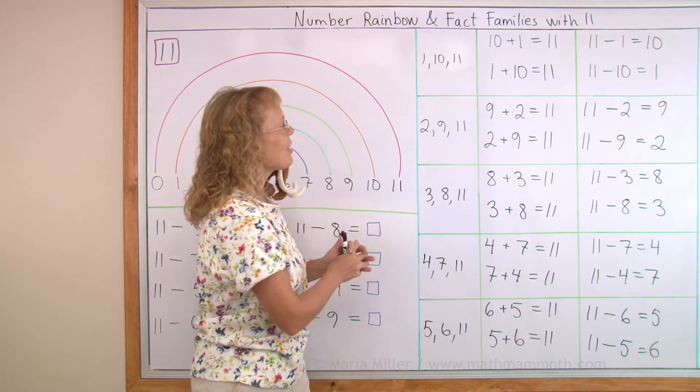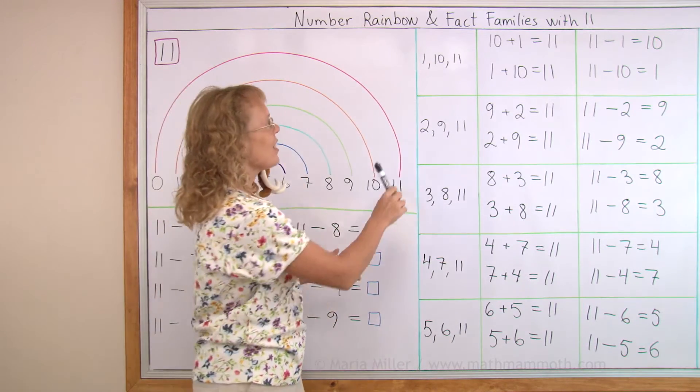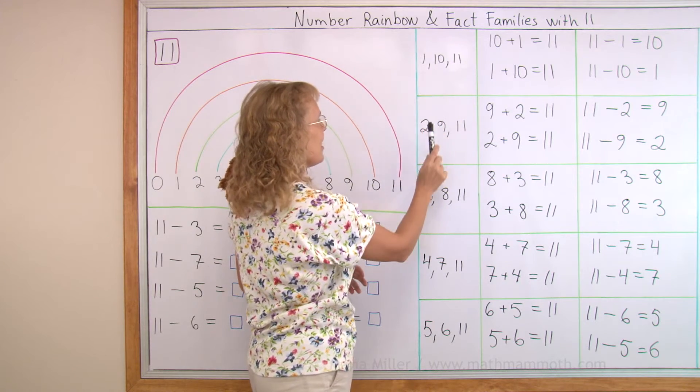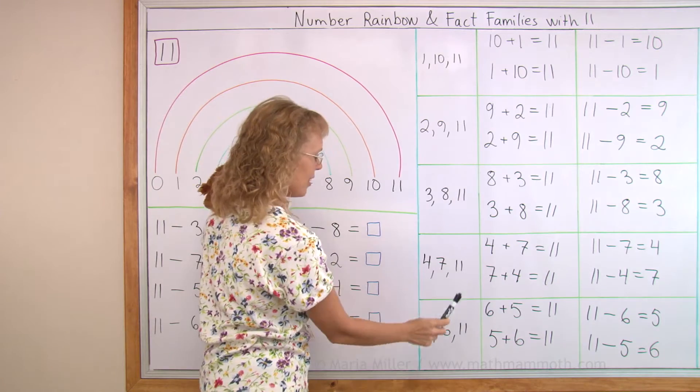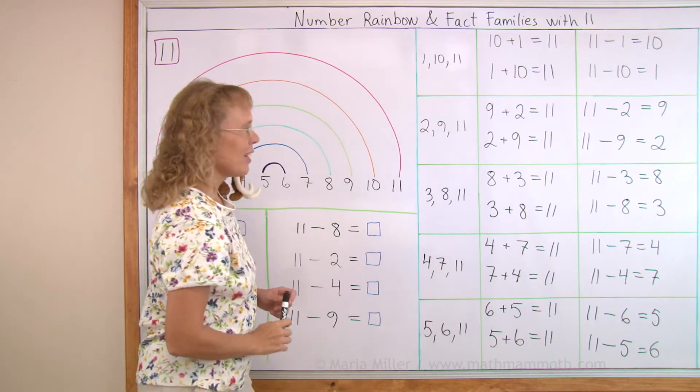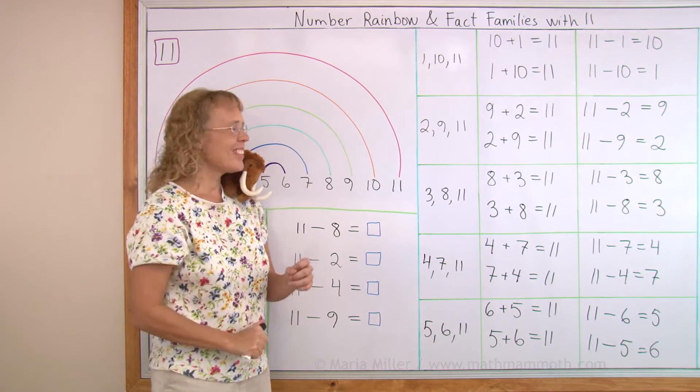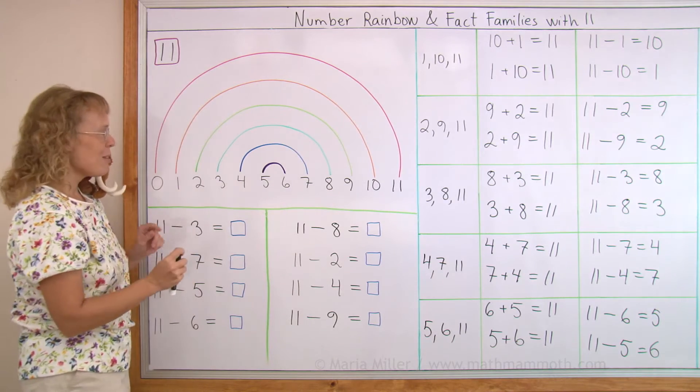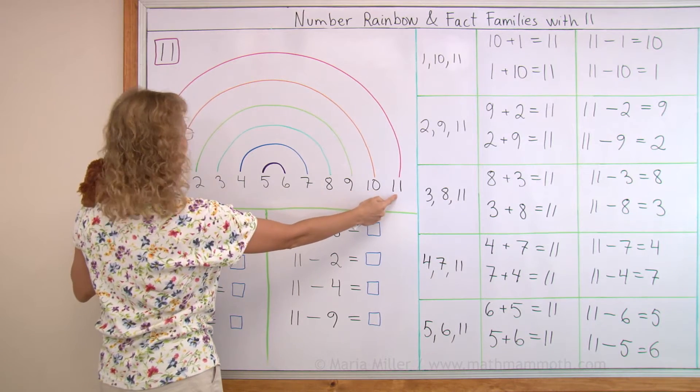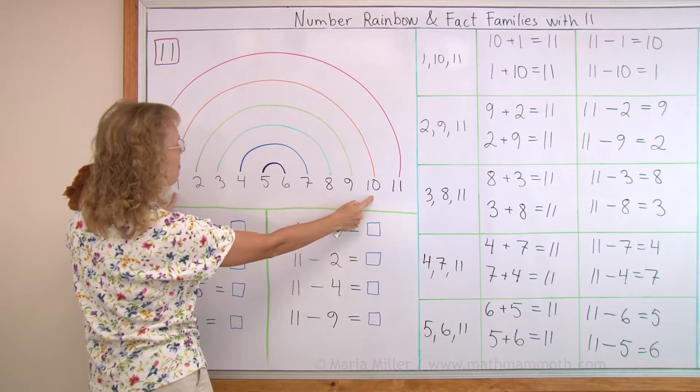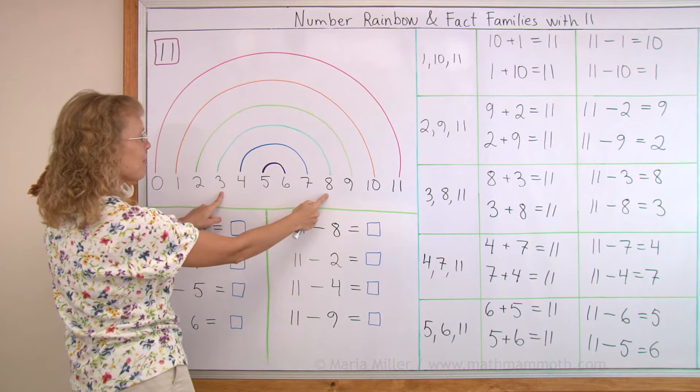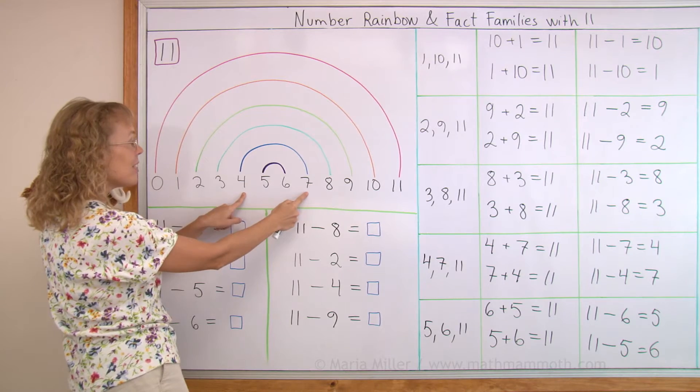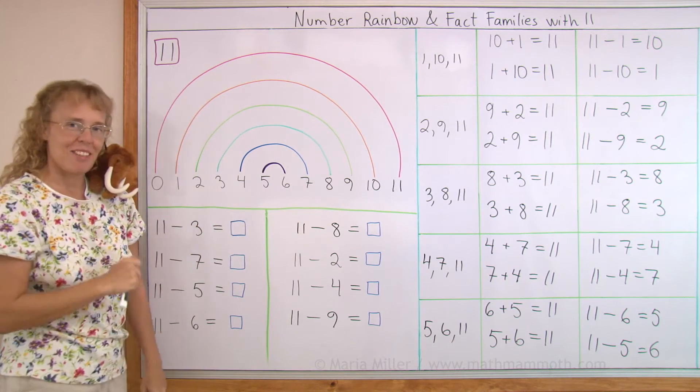Look at it for a moment so you will remember these combinations. 1 and 10, 2 and 9, 3 and 8, 4 and 7, 5 and 6. Because soon we are going to drill. One more time from the rainbow we have 0 and 11, 1 and 10, 2 and 9, 3 and 8, 4 and 7 and 5 and 6 making 11.